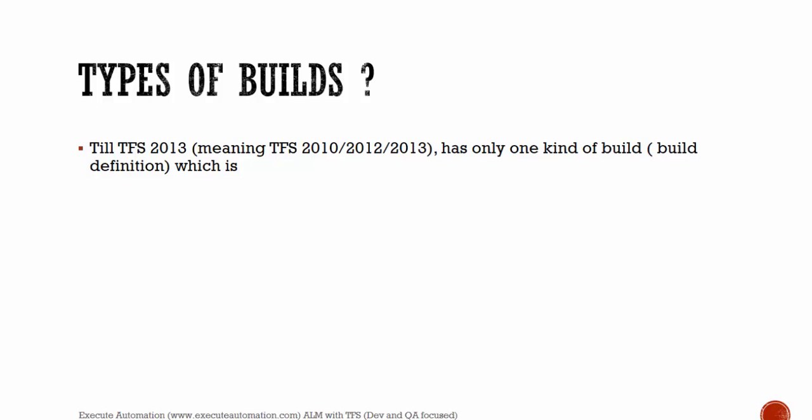What are the different types of builds available in Team Foundation Server? From TFS 2010, 2012, and 2013 there was only one kind of build definition. A build definition is essentially a procedure describing how you build your application. Up through TFS 2013, that build definition type was called XAML build — XAML build was the one available until 2013.